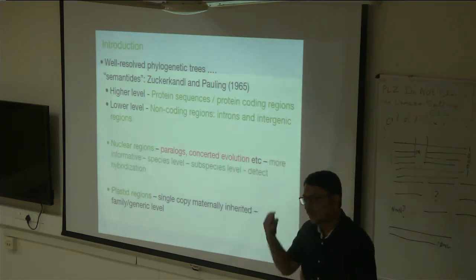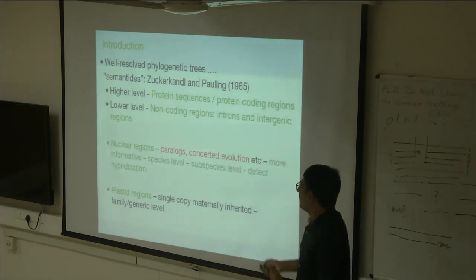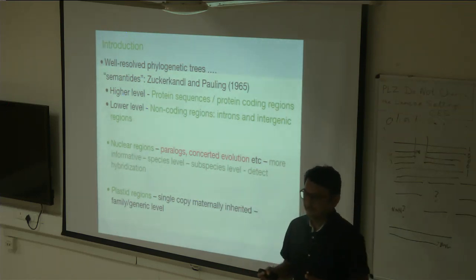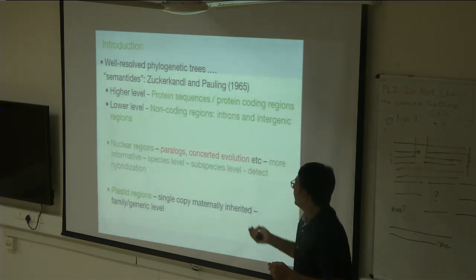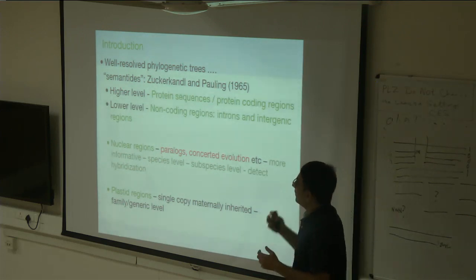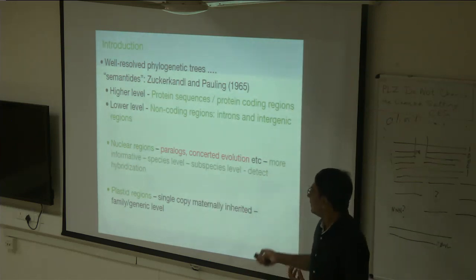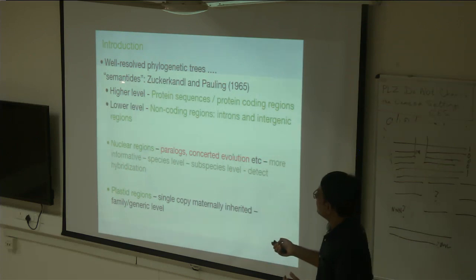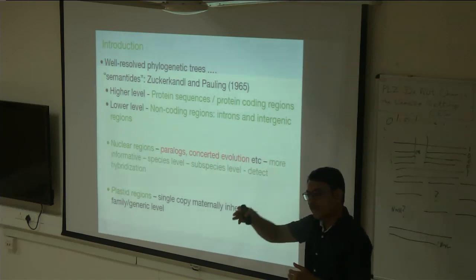We know that all organisms are interrelated in some way with a common ancestor in the distant past. Previously, people used only morphology. But in 1965, a monumental paper by Zuckerkandl and Pauling proposed using molecules for building phylogenetic analysis. They defined a term called semantides — DNA, RNA, and proteins — molecules capable of changing over time and capturing the evolutionary process.